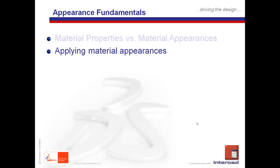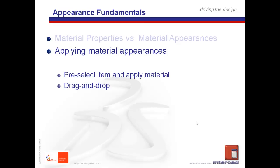The next point is how do we apply material appearances, and why is it so restrictive? There are two general approaches. One is to pre-select the faces or features of a component and apply the material. The other is to do a quick drag and drop. Let's switch over to SOLIDWORKS and take a look at how we can do this very quickly and easily.